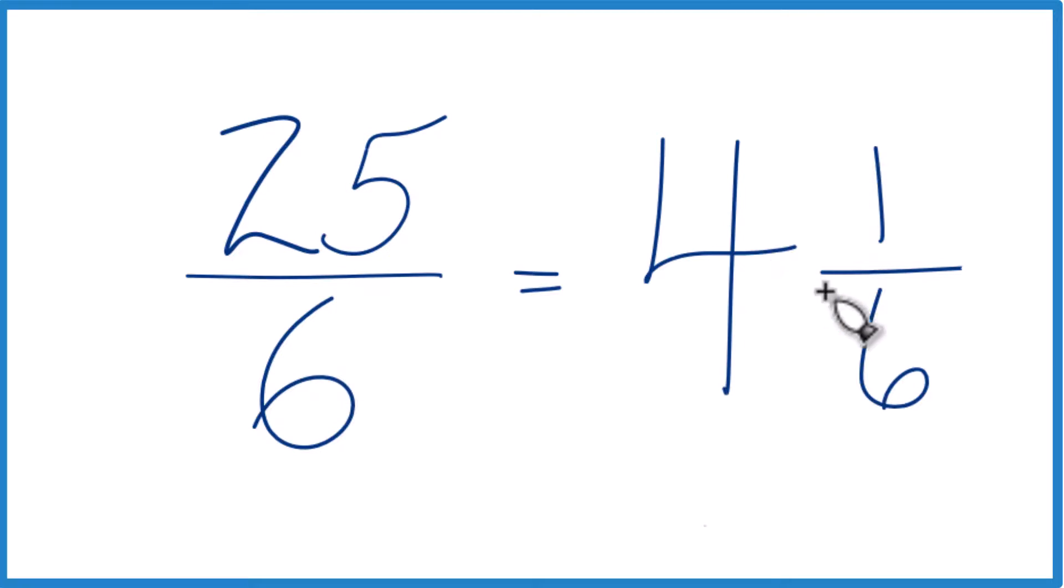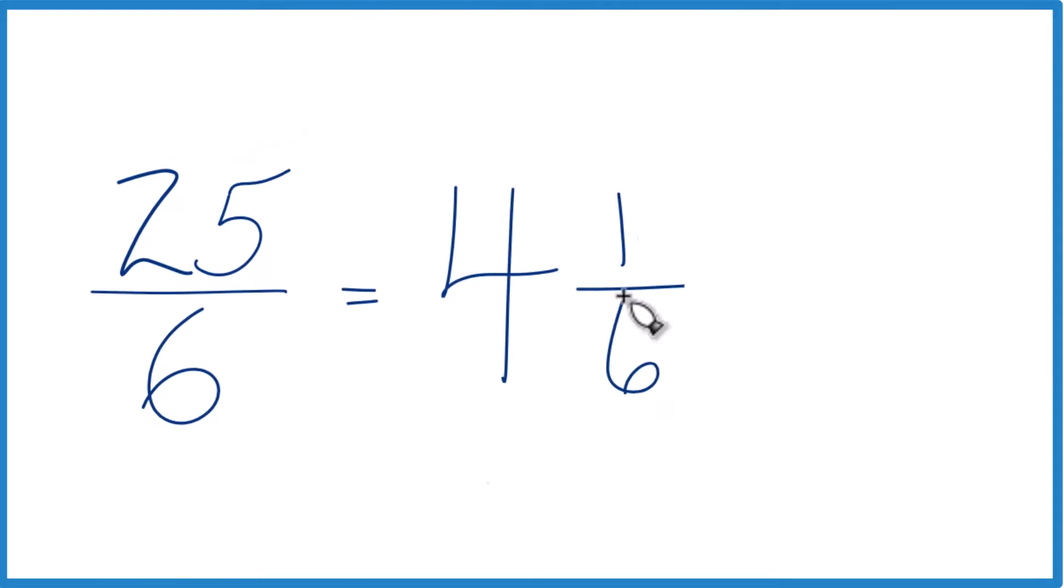And you can check that. 4 times 6 is 24 plus 1 is 25. So that's the numerator. And then you just bring that 6 across in the denominator.